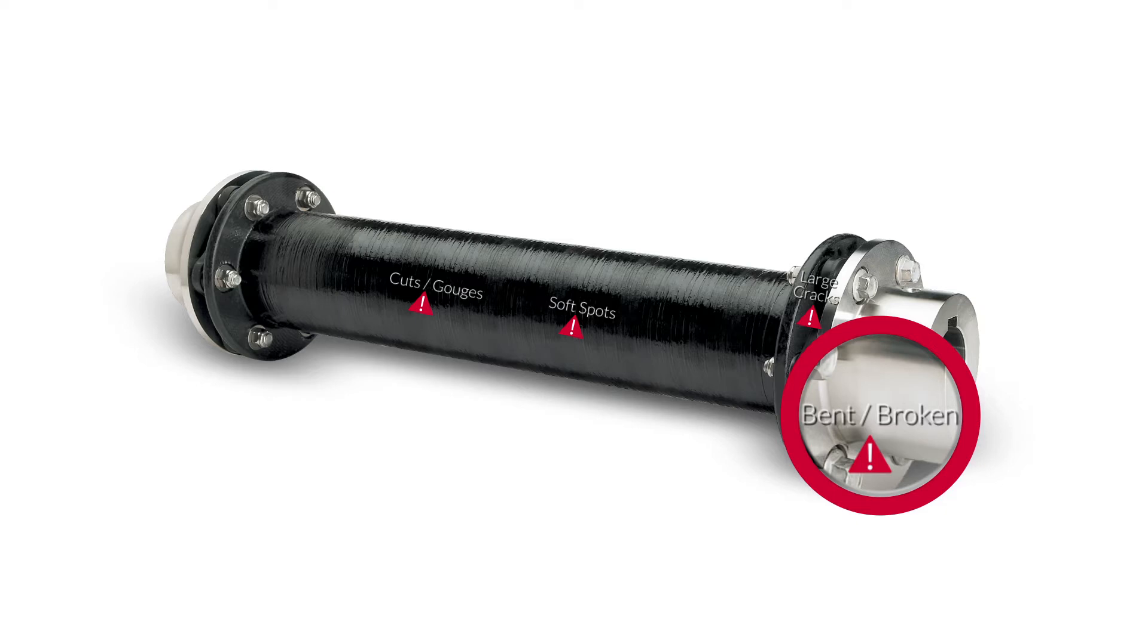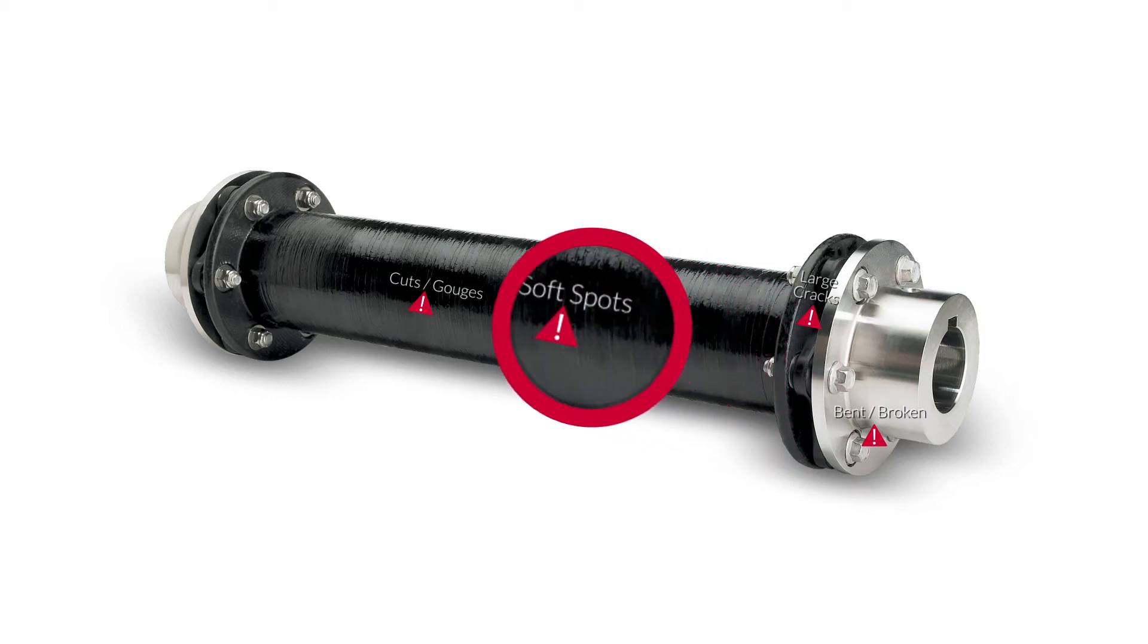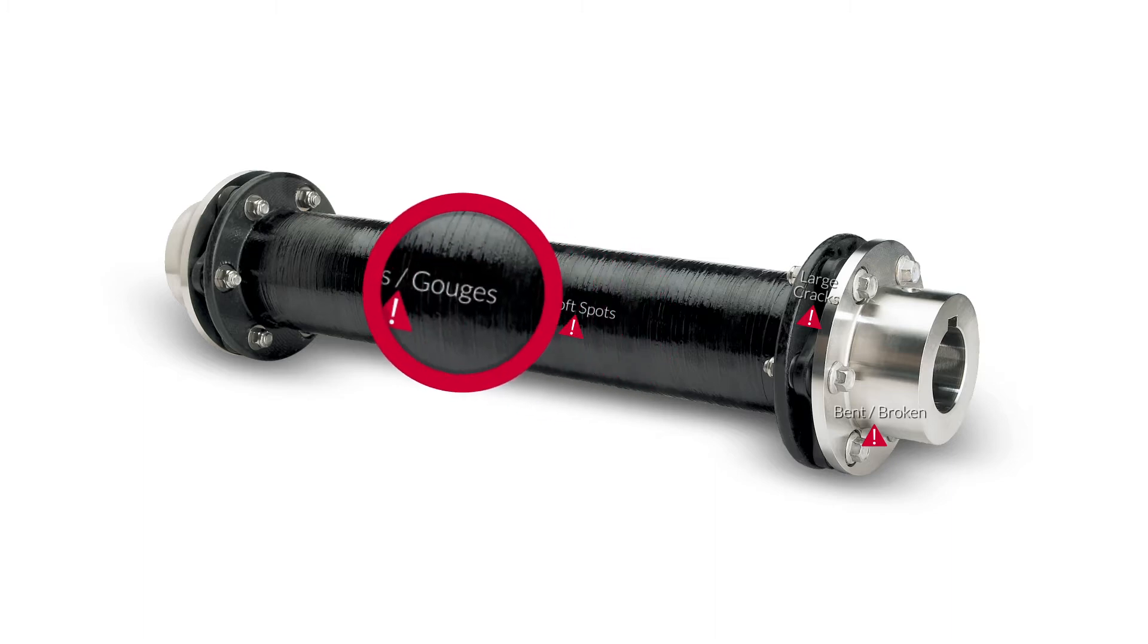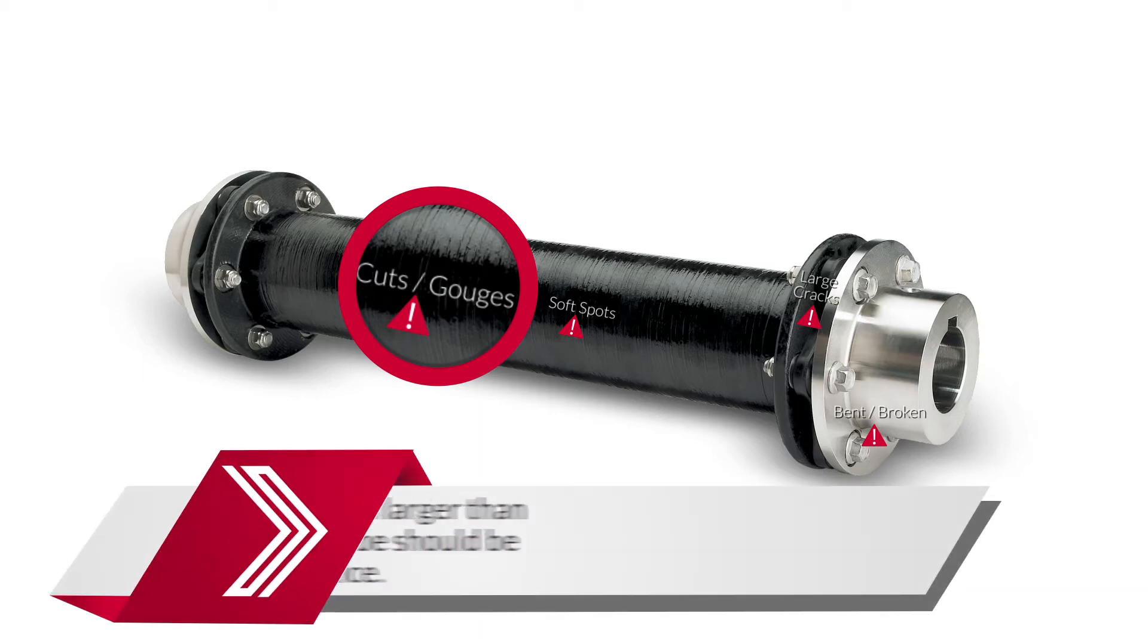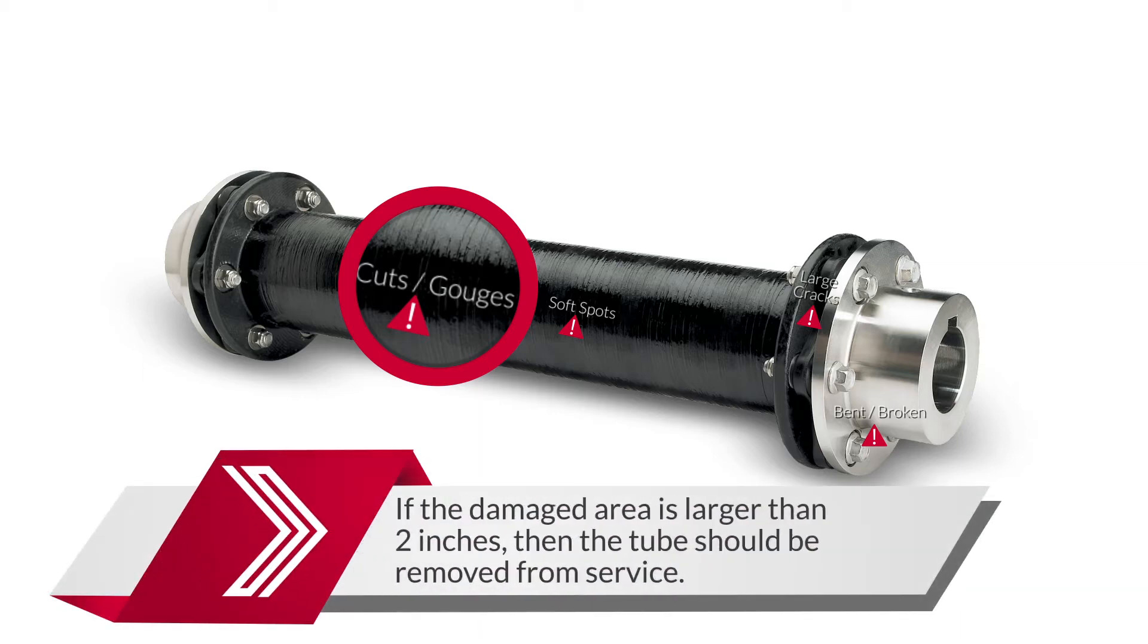With the coupling still installed, the components of your Addicts composite coupling can be visually inspected for possible damage. The composite center spacer should be checked for visual damage. Specifically, soft spots and large cuts or gouges could be areas of concern. These are typically caused by hard impacts to the rotating shaft. If the damaged area is larger than 2 inches, then the tube should be removed from service.